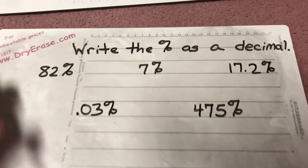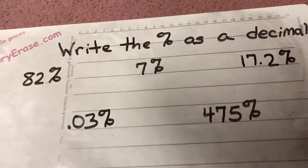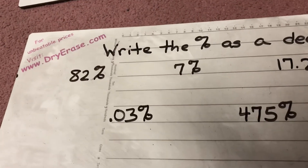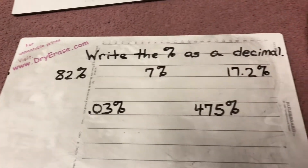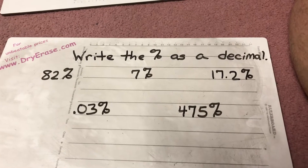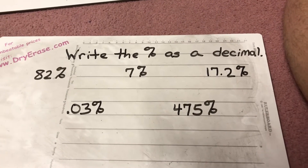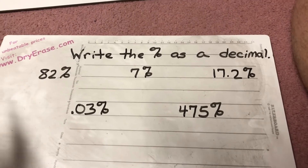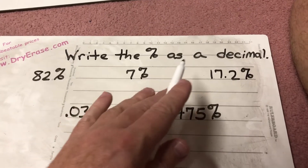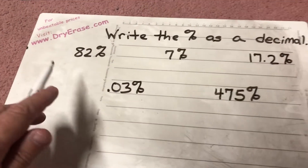All right, sixth graders, we're getting into chapter four, dealing with percents and decimals and fractions. This is lesson 4.2, and our first set of instructions is to write the percent as a decimal. So these are all percents.